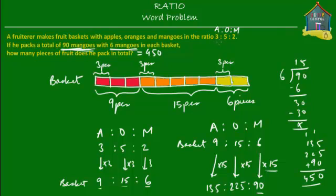So from the ratio that was given to us — apples to oranges to mangoes is three sets to five sets to two sets — what we figured out was that each basket will have nine apples, 15 oranges, and six mangoes. And if he packs 90 mangoes, then he's going to need 15 baskets. So he's going to pack 15 baskets of fruit with 135 apples, 225 oranges, and 90 mangoes, which in total is equal to 450 pieces of fruit.